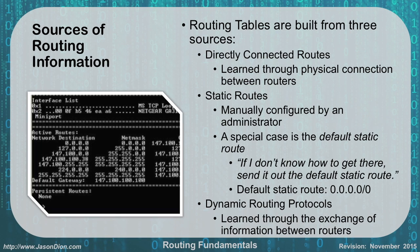Static routes are used when an administrator manually configures a router to have a particular route. The default static route — the default gateway — is a special case: if you don't know where else to send it, you send it out to this default route, which is always written as 0.0.0.0/0. If you're working a problem and a PC can't get out to the internet, check that it has a default route set. Without one, the PC won't know where to send traffic that it's not directly connected to.